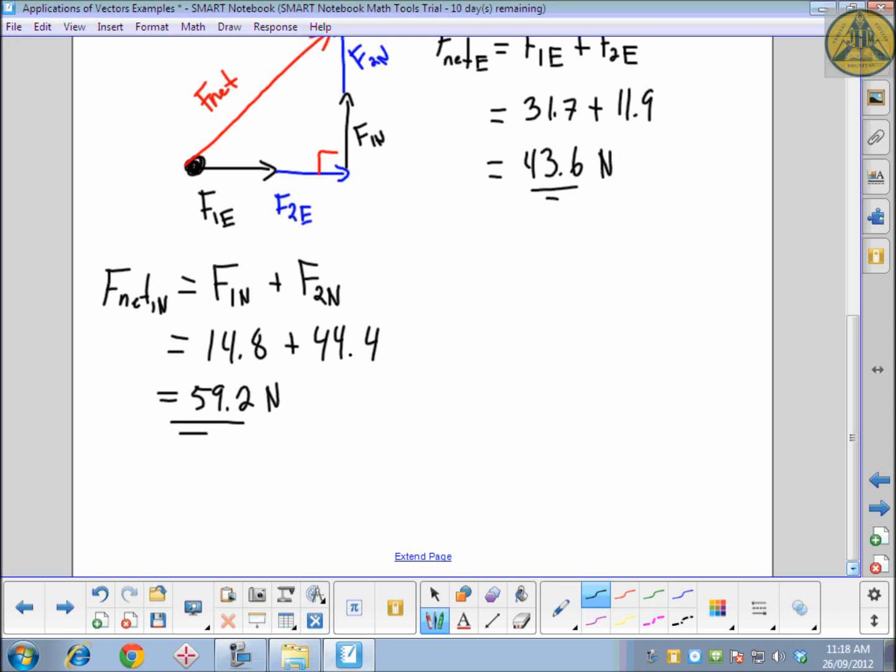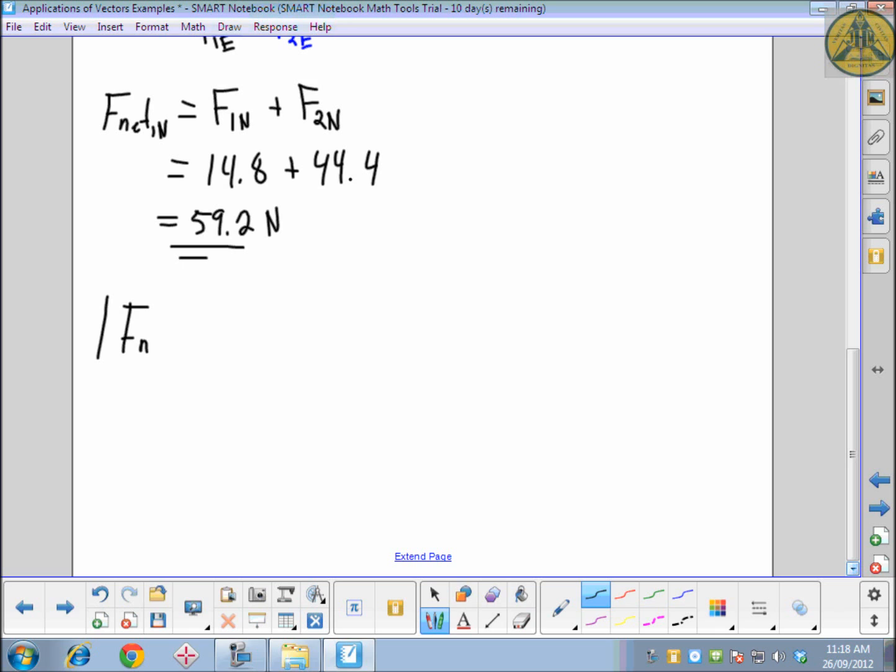So I'll do that right below here. So our net force. Remember those parallel line brackets mean magnitude. We didn't calculate the direction yet. 43.6 squared, added to 59.2 squared. All of that has to be square rooted. So that's equal to the square root of 5405.6. Because we're just looking for magnitude, we just ignore the negative square root. And so the positive root, or the principal root, comes out to be about 74 newtons. We'll keep two digits as our problem started with two digits.